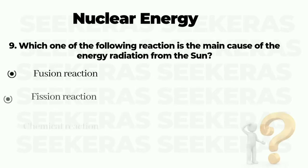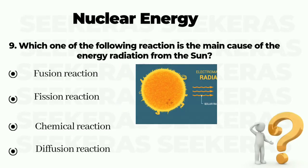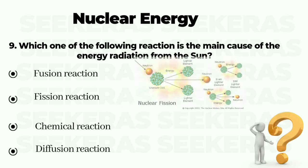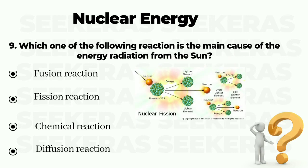Question number 9. Which one of the following reactions is the main cause of the energy radiation from the sun? Option A fusion reaction, option B fission reaction, option C chemical reaction, and option D diffusion reaction. The correct answer is option B, fission reaction.